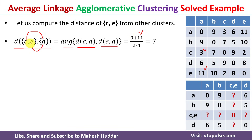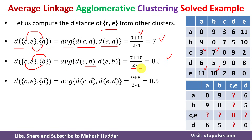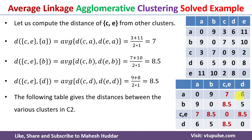So the distance from CE to A = (3 + 11) / (2 × 1) = 7. Similarly, the distance from CE to B = (distance C to B + distance E to B) / (2 × 1) = (7 + 10) / 2 = 8.5. The distance from CE to D is also calculated as 8.5. We update the distance matrix with these values.